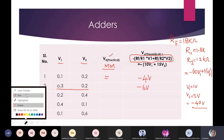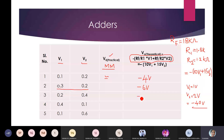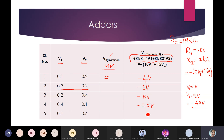For V1 = 0.2, V2 = 0.4: Vout = −(10×0.2 + 15×0.4) = −8 V. For another set, you get −5.5 V, and for the last set, −10 V. All values are within the ±15 V supply range.